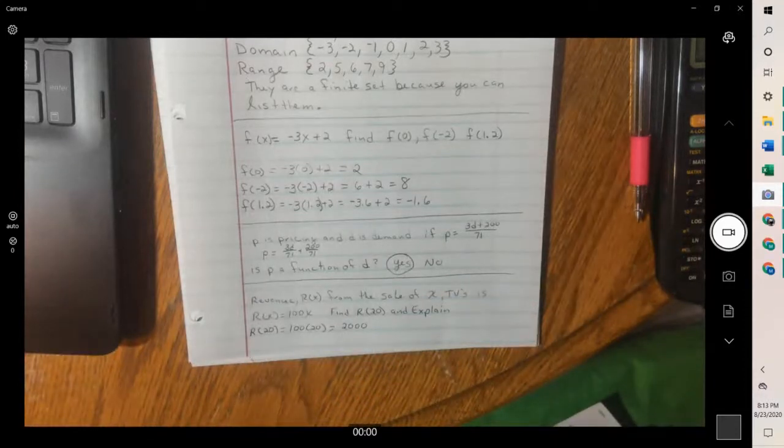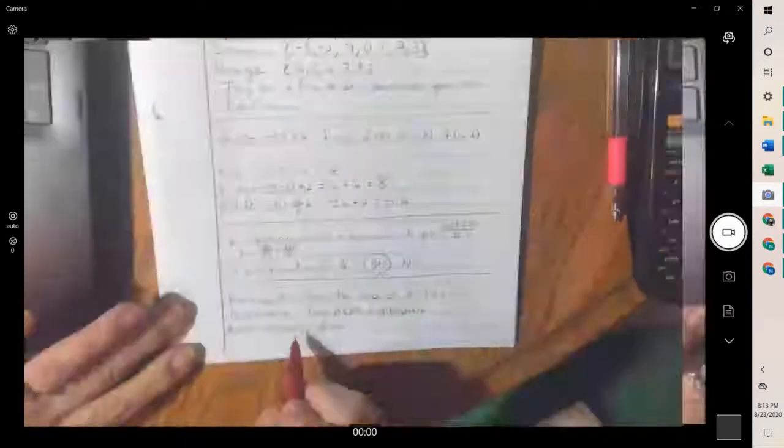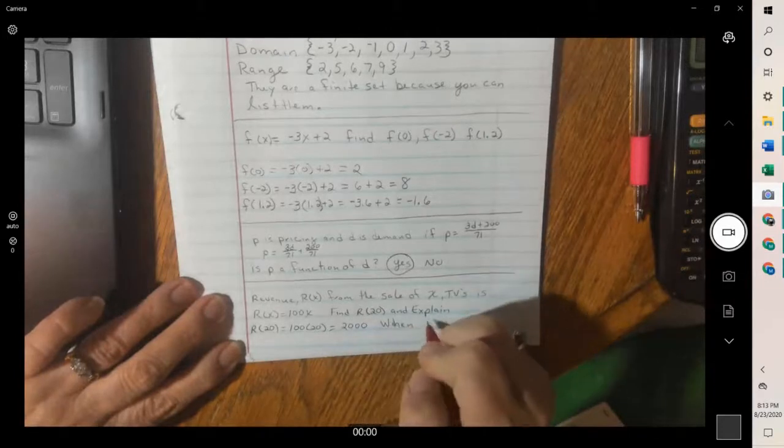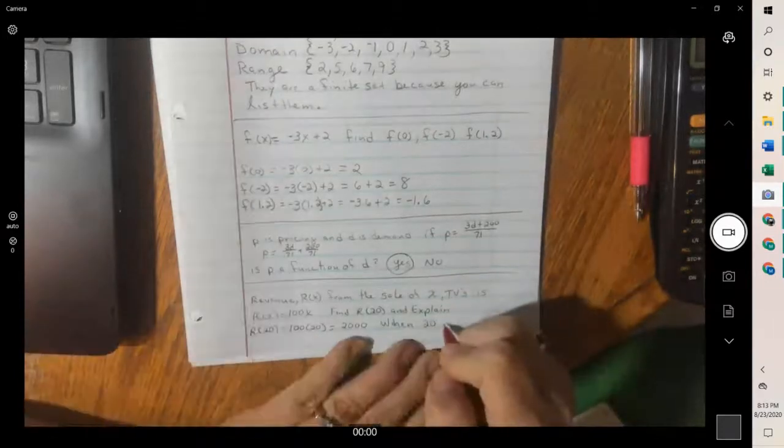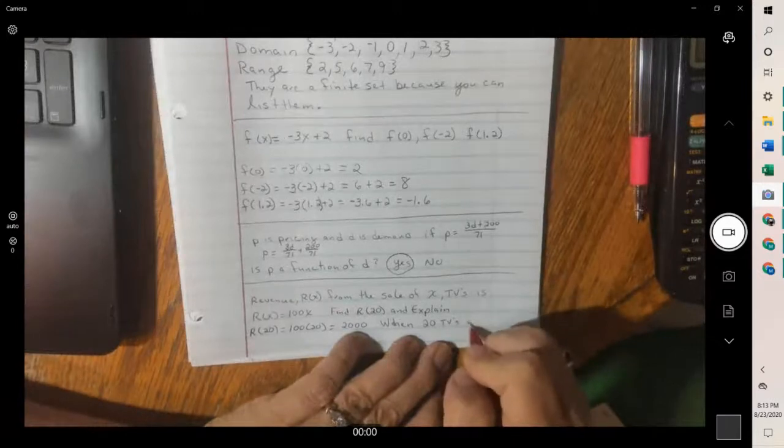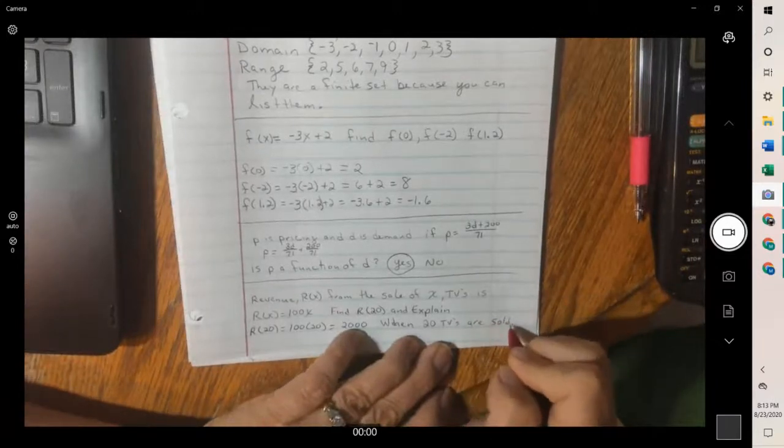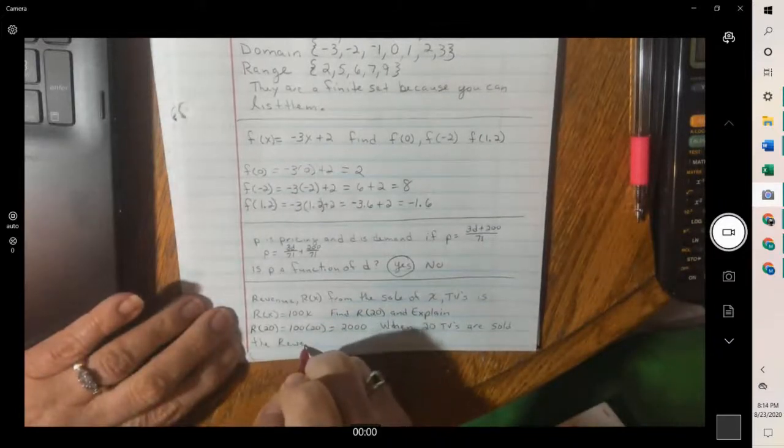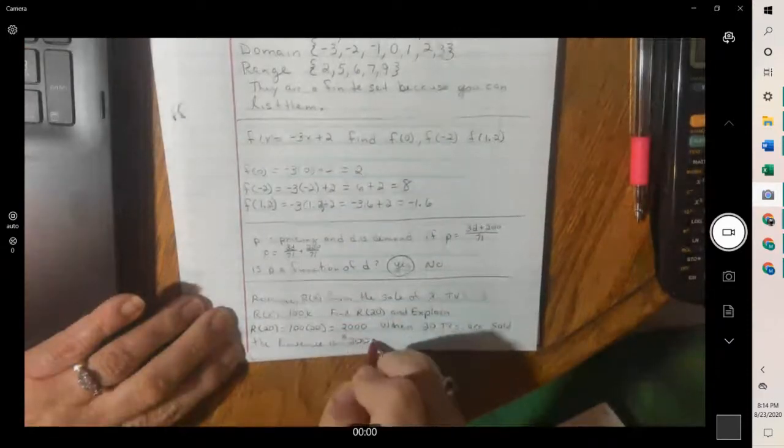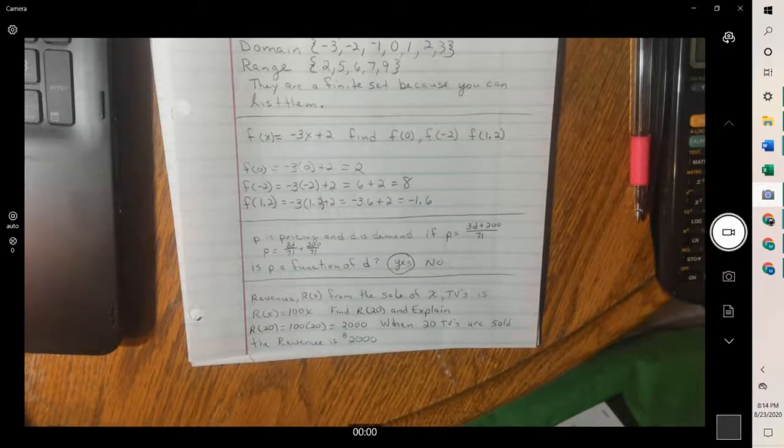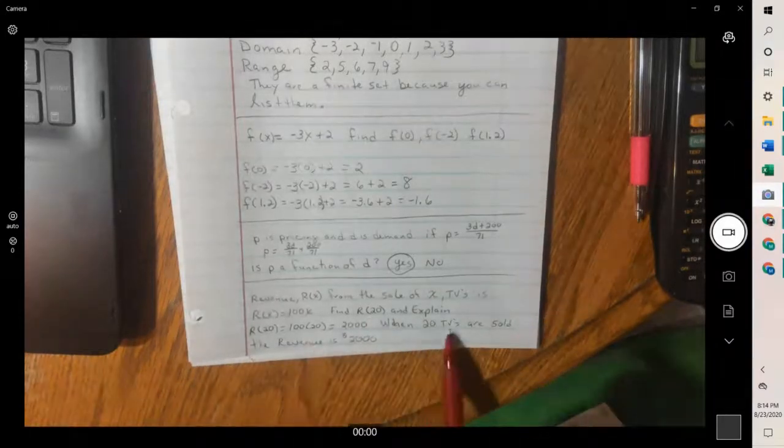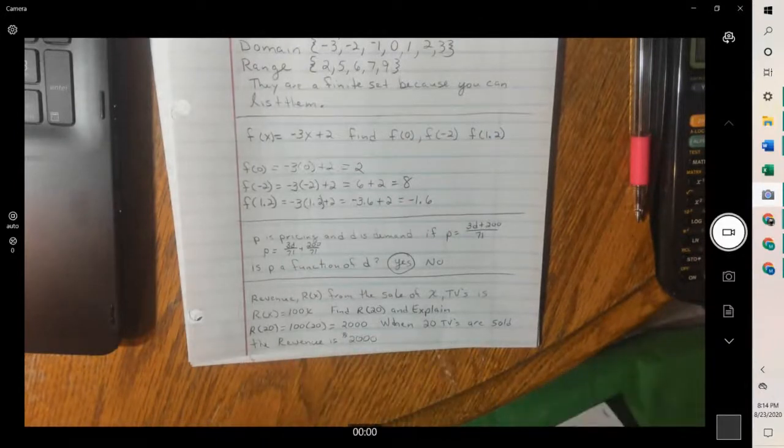But what is the 2,000? Well, when you're explaining it, that means we put in 20. So when 20 TVs are sold, the revenue is $2,000. So x was number of TVs, which is what we plugged in. So 20 televisions are sold. The revenue is $2,000.